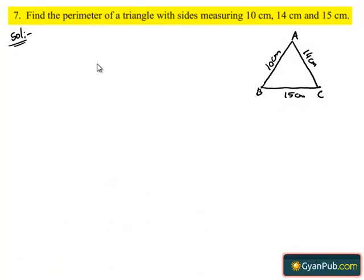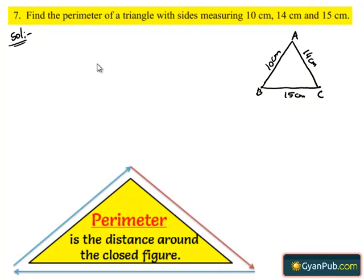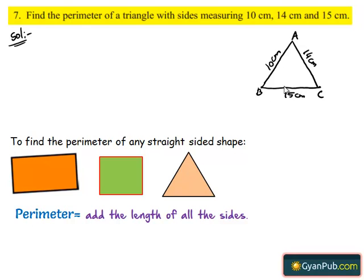We have to find the perimeter of the given triangle. First we should know what is meant by perimeter. Perimeter is the distance covered along the boundary forming a closed figure when you go around the figure once. Here the perimeter of the triangle is nothing but sum of the lengths of the sides.